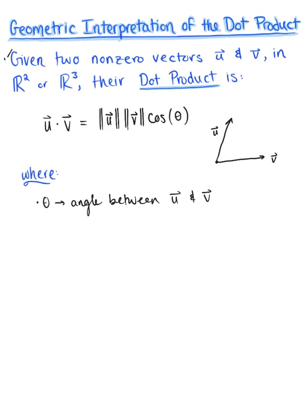We are trying to find that angle in between — that is our theta, the angle between vector u and vector v — and this is such that theta must be greater than or equal to 0 and less than or equal to pi.